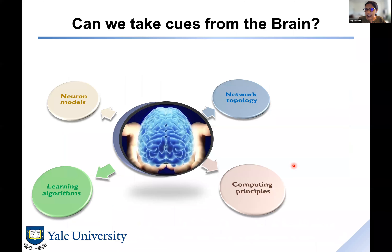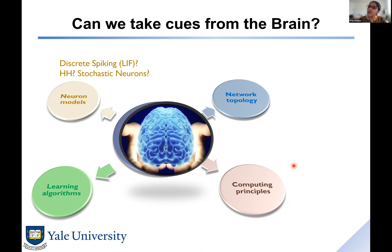People started thinking about how to bridge these inefficiency gaps by taking cues from the brain — the most efficient and powerful natural intelligent machine. The cues we want to learn: can we come up with better neuronal models? Computation in the brain is much more timing-specific and spike-driven, similar to spiking neural networks. The neuron itself is more stochastic. By integrating such brain-like neuronal functionality, can we bridge the inefficiency gap?